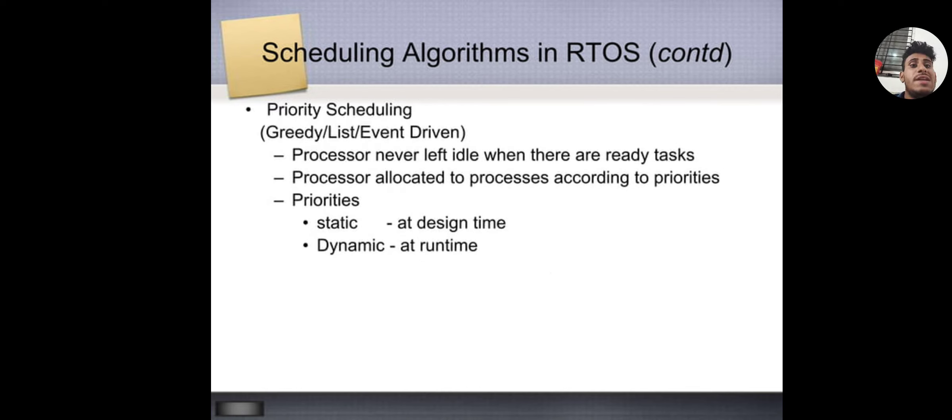Priority scheduling: For example, greedy. Processor never left idle when there are ready tasks. Processor allocated to processes according to priorities. Priorities work: Static at design time and dynamic at runtime.